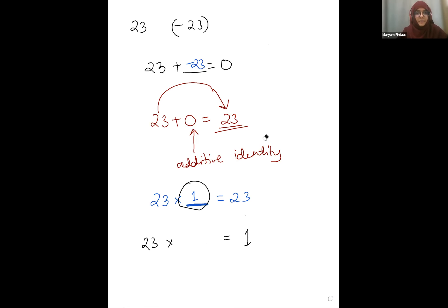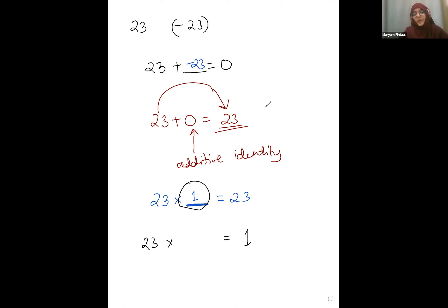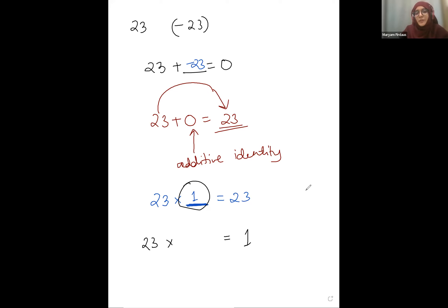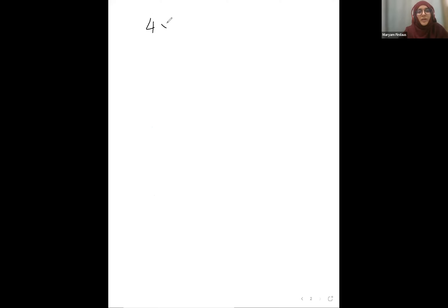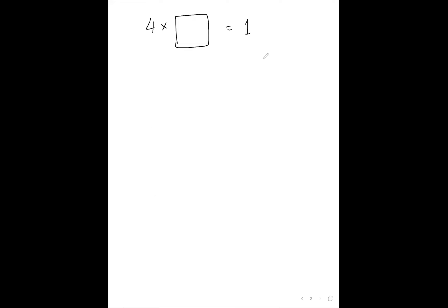If you multiply 23 with something you get 1 — think. Let's take an easier example: 4 multiplied by something will give you 1. If you multiply 4 with 0, you get 0, so it can't be 0. If you multiply 4 with 1, you get 4, so it can't be 1. If you multiply 4 with 4, you get 16, so it can't be that either.